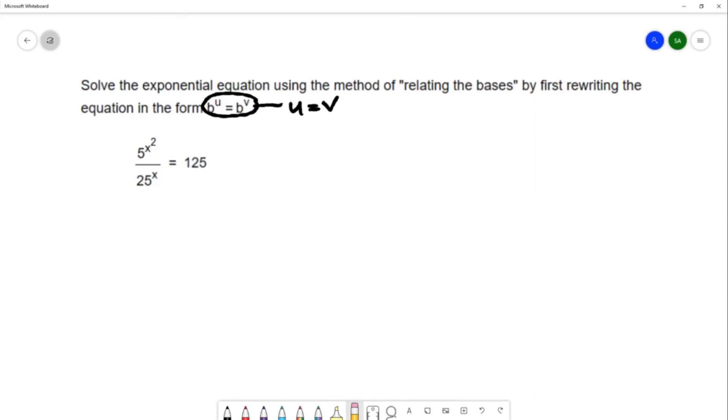So we want to start by making the bases the same, and I'm going to take a closer look at the bases that I have. I have a base of 5, a base of 25, and a base of 125. Notice that these all end in 5 and these also happen to be powers of 5.